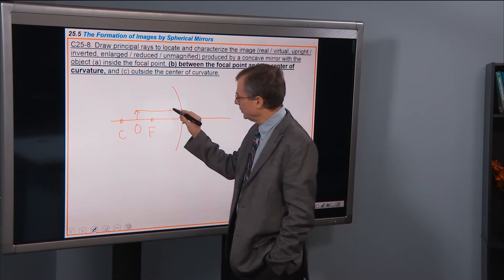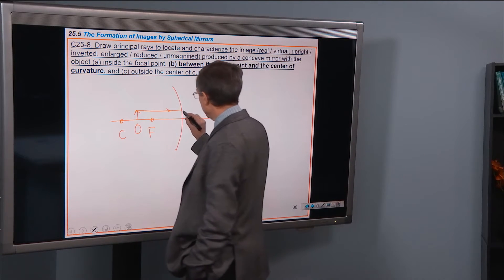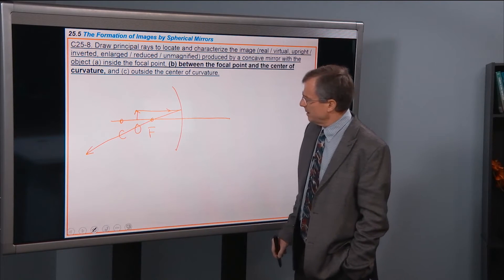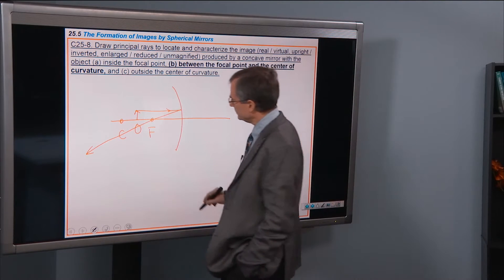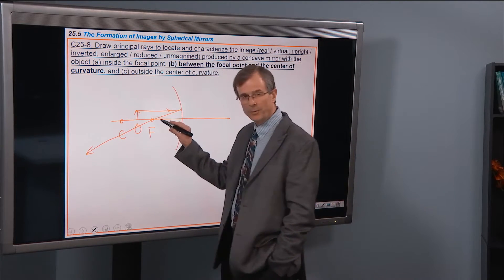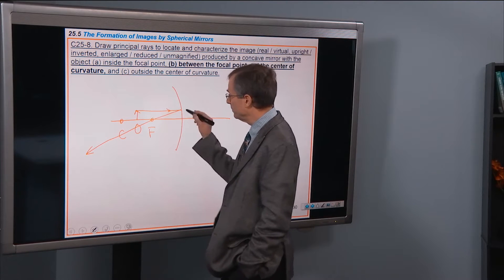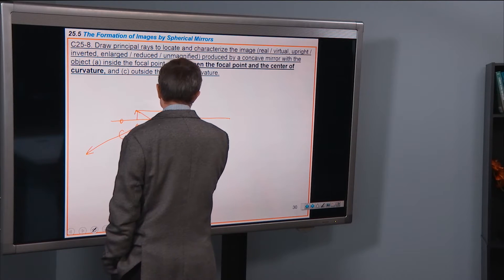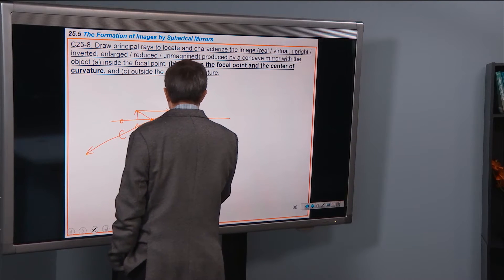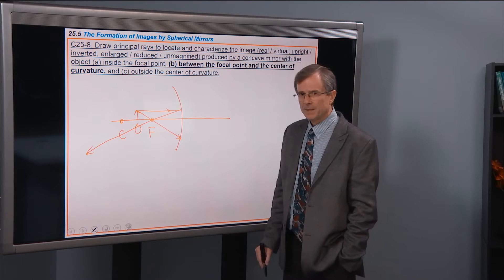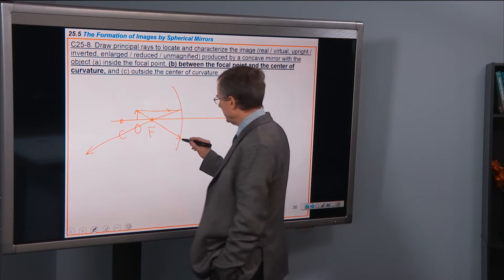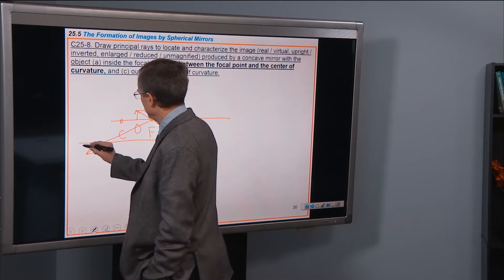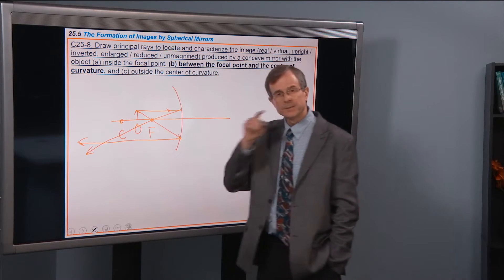And then what does it do? Well, it just goes right back through the focal point. Happy day. What about the ray that goes first through the focal point and then to the mirror? Instead of going to the mirror and then through the focal point, let's go through the focal point and then to the mirror. What does that one do? Well, I claim that it comes off as a paraxial ray.